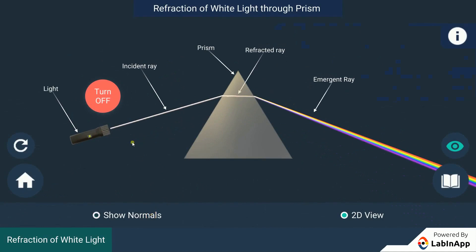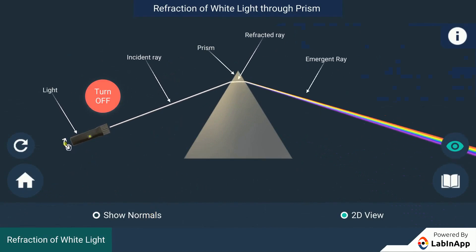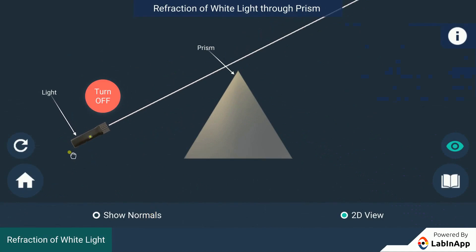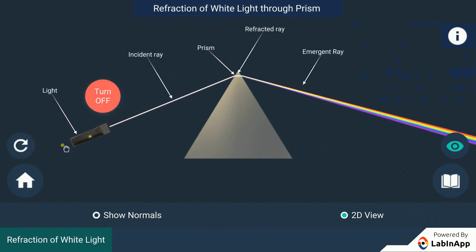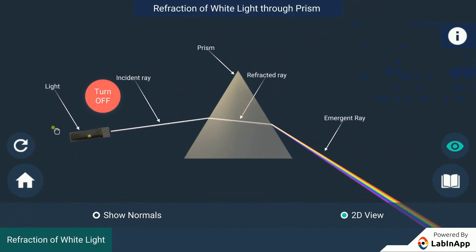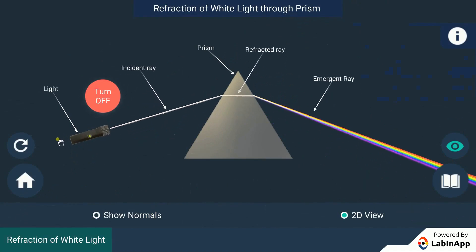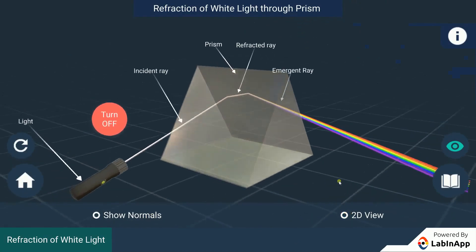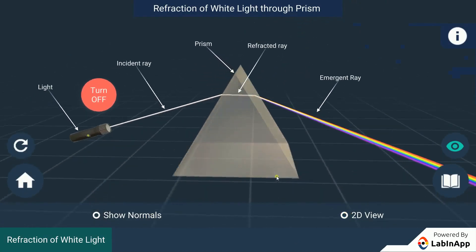Why do we get these colours? As the light passes through a prism, different colours of light bend through different angles with respect to the incident ray. The red light bends the least while the violet light bends the most. Thus, the rays of each colour emerge along different paths and become distinct.